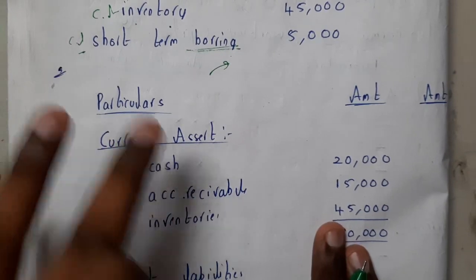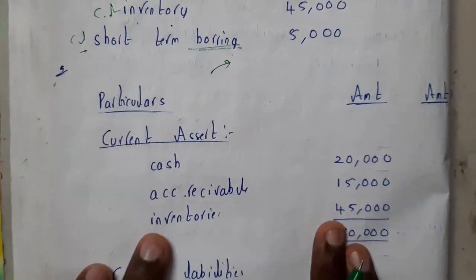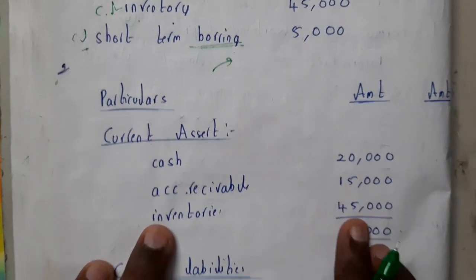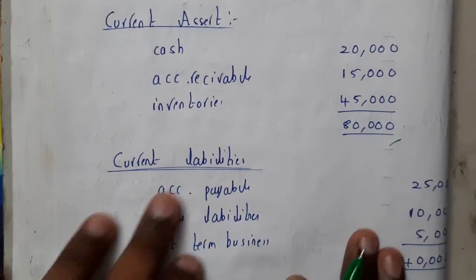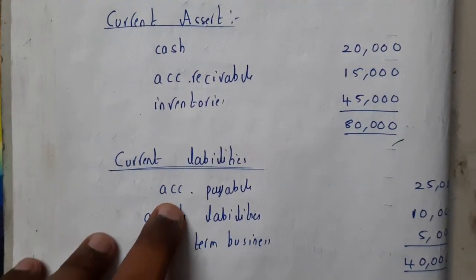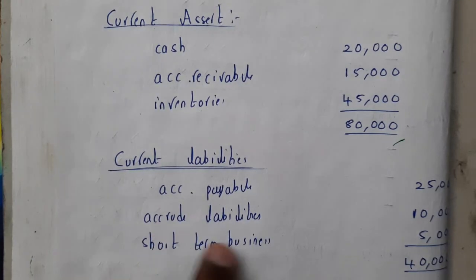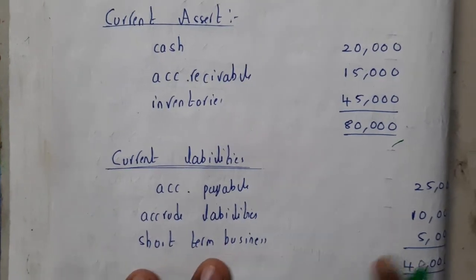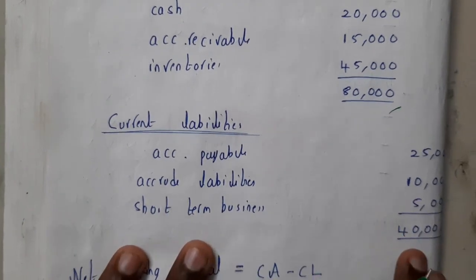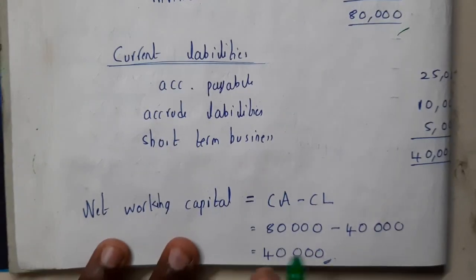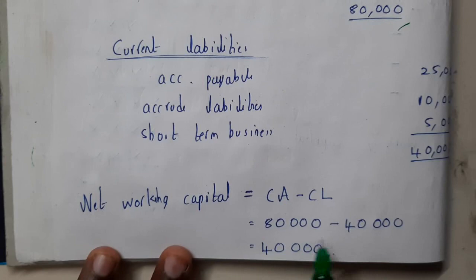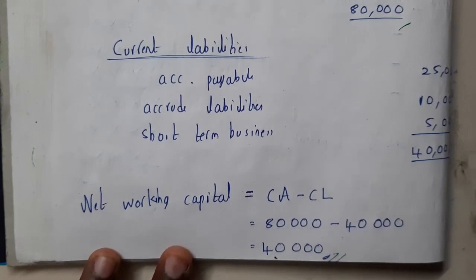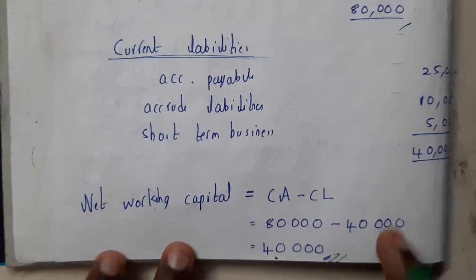Current assets: cash 20K, accounts receivable 15K, inventory 45K — the total is 80K. Current liabilities: accounts payable 25K, accrued liabilities 10K, short-term borrowing 15K — total is 40K. Net working capital is current assets minus current liabilities, so 80,000 minus 40,000 equals 40,000. That will be your working capital.